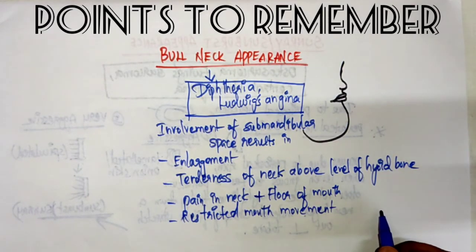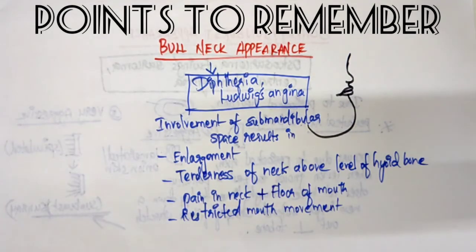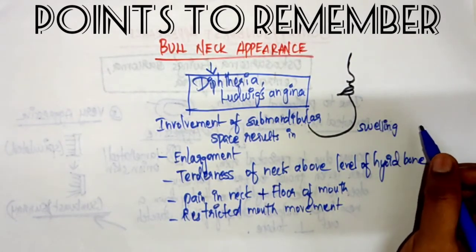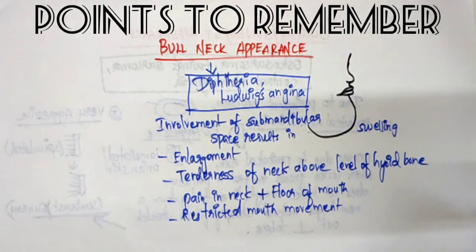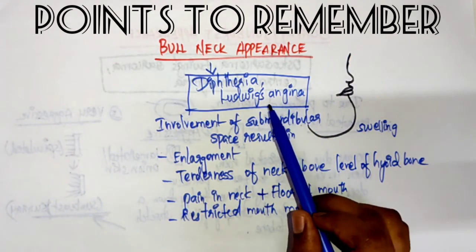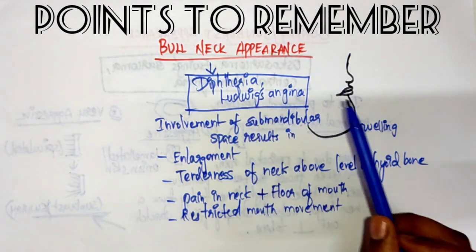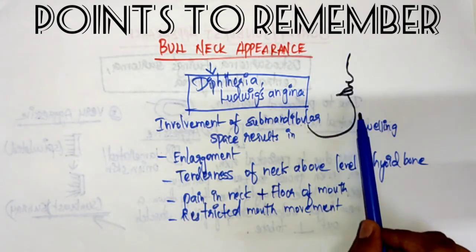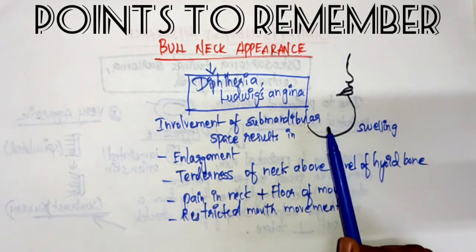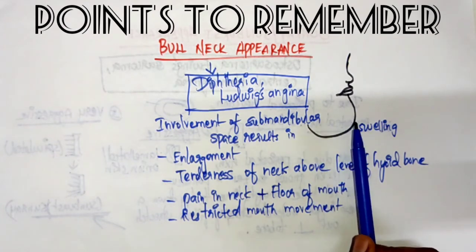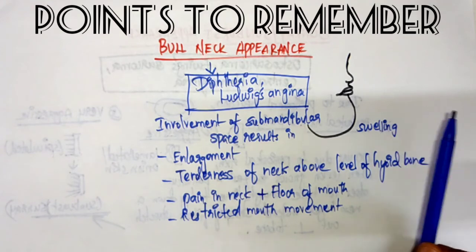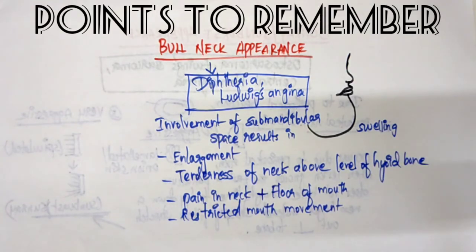There will also be swelling in the mouth and the neck, as you can see here. To summarize: bull neck appearance is seen in diphtheria and Ludwig's angina. It is due to involvement of the submandibular space, resulting in enlargement. There will be tenderness of the neck above the level of the hyoid bone, pain in the neck and the floor of the mouth, and restricted mouth movement.